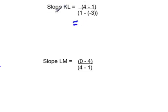All right, so we're going to find the slope of all three sides. We have to use the slope formula, which is y2 minus y1 over x2 minus x1.